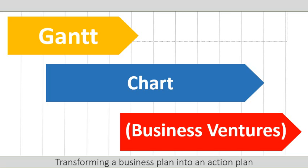G'day. I'm really excited about this topic. It is called a Gantt chart and it falls in the section where we talk about transforming a business plan into an action plan. In life we all have plans, but somewhere along the line one needs to sit down and draw this plan up into something that is visual, doable, and easy to understand — and that is exactly what a Gantt chart is.